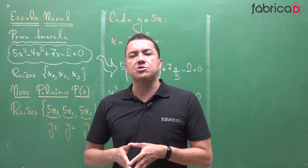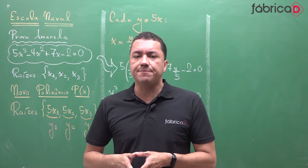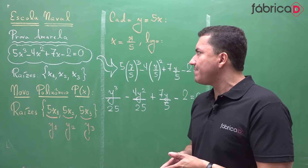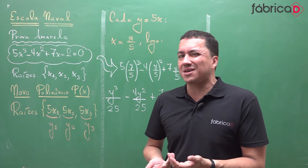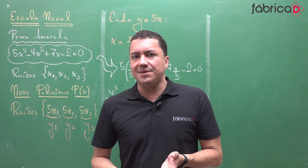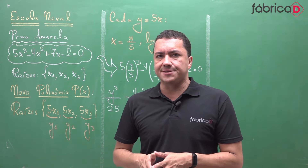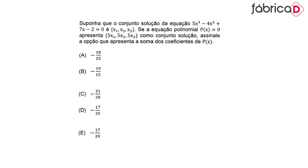Continuing with Escola Naval 2021–2022 exam solutions: a polynomial question. There's a detail here — as often happens in these exams — something you need to handle carefully, otherwise you end up not marking anything. The statement says: suppose the solution set of 5x³ minus 4x² plus 7x minus 2 equals 0 is {x1, x2, x3}. If the polynomial equation p(x) = 0 has {5x1, 5x2, 5x3} as its solution set, find the sum of the coefficients of p(x).